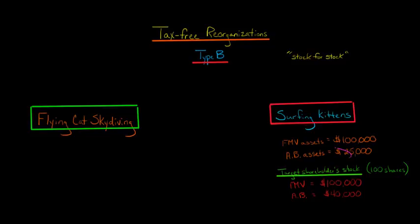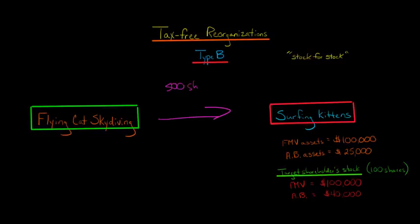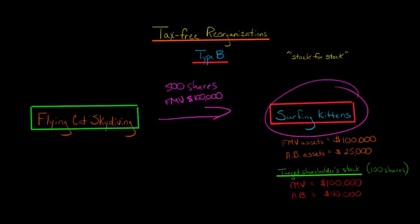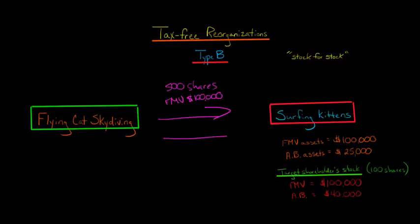The target shareholders — in this case, one shareholder of Surfing Kittens — have 100 shares of stock with a fair market value of $100,000. You're going to give 500 shares of Flying Cat Skydiving stock worth $100,000 to that target shareholder. In exchange, Flying Cat Skydiving is going to receive the 100 shares from that target shareholder.